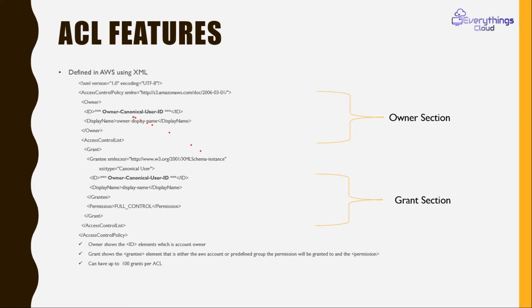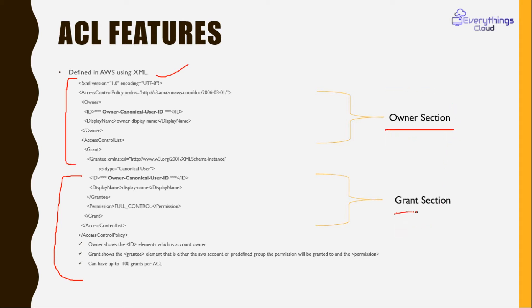This is how the XML file looks. It might be confusing if you're seeing it for the first time, but don't worry — we're not going to use it directly in our series. The XML file is divided into two parts: the owner section and the grant section. The owner section contains the canonical user ID, which I'll show you how to find in the demo section.